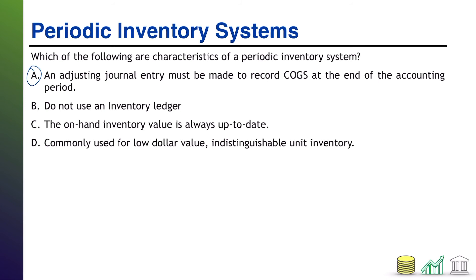C: the on-hand inventory value is always up to date. That is not true either. Because you're not making adjustments with each transaction, your balance is not up to date until you get to the end of the period and update it.